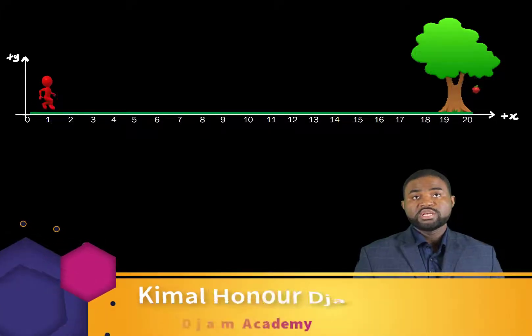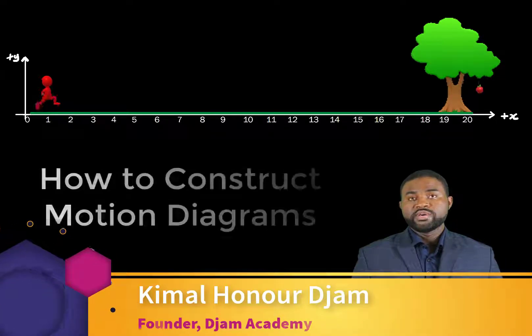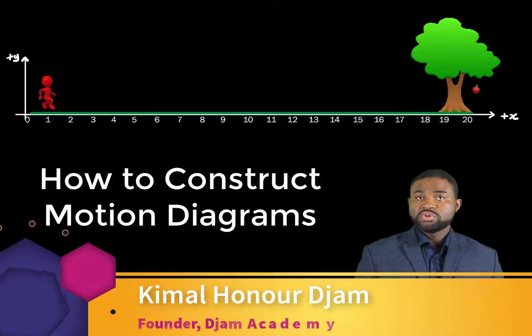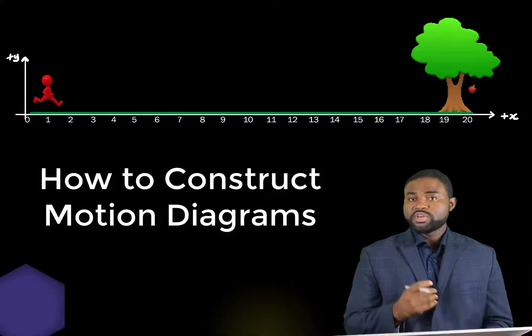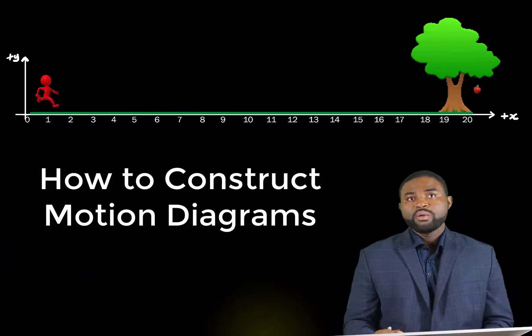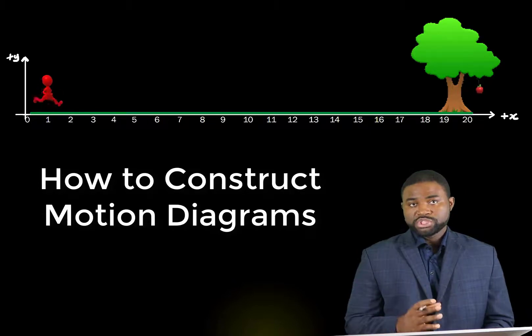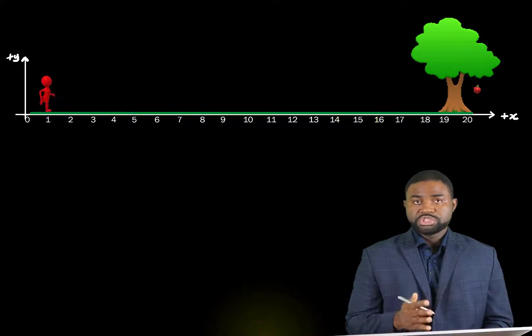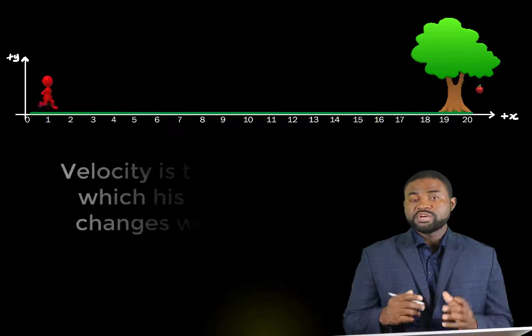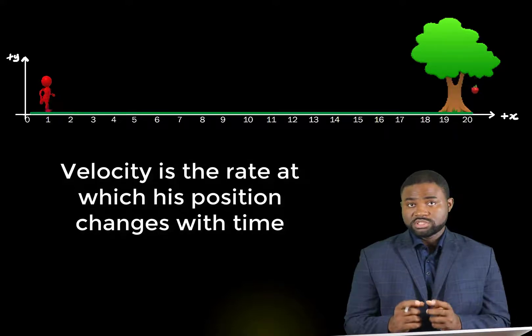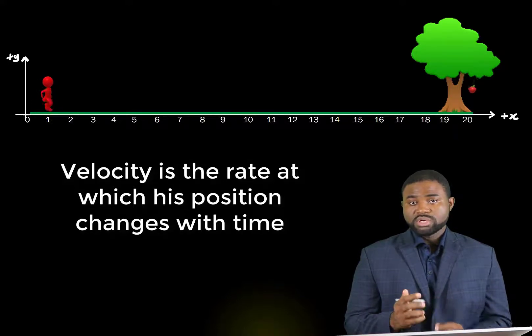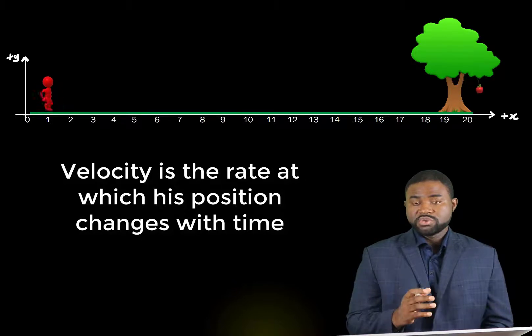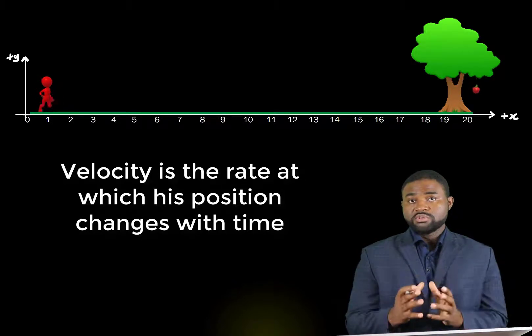Let's suppose that he starts running towards the right, meaning that he starts running towards the direction of increasing x. Now his position definitely changes as he runs. The rate at which his position changes with time defines what we call his velocity. In other words, his velocity is simply how fast he is running in that particular direction.